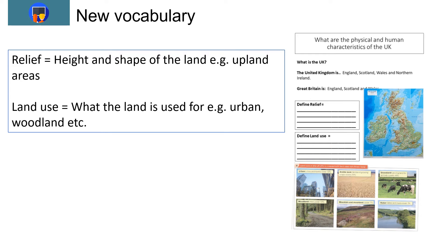For our first piece of work on page two, there are two key words to remember for the exam: relief and land use. Relief is the height and shape of the land — for example, whether it's an upland or lowland area. Relief is shown using contour lines on maps, and these kinds of maps are common in the exam. Land use refers to what the land is used for, such as whether it's an urban area or a woodland area. Pause the presentation and copy down both definitions.